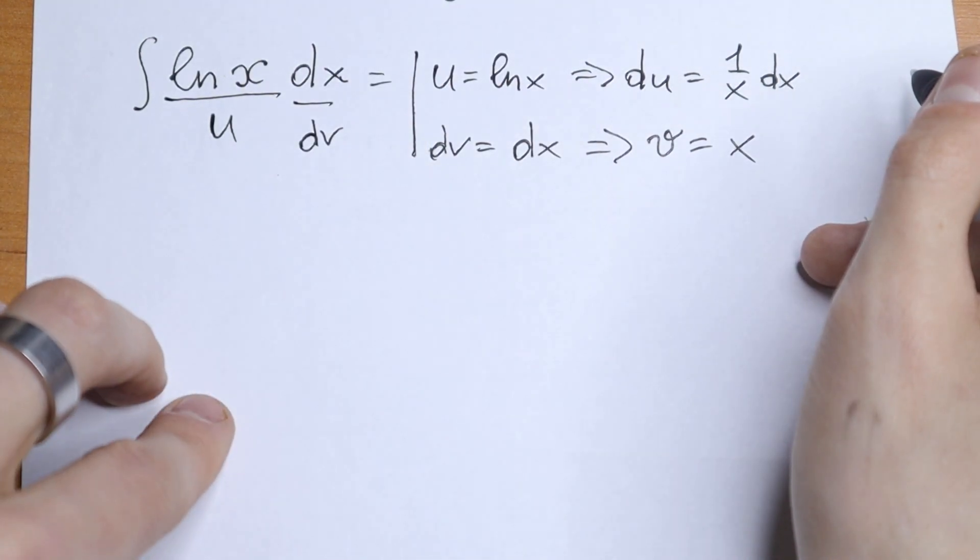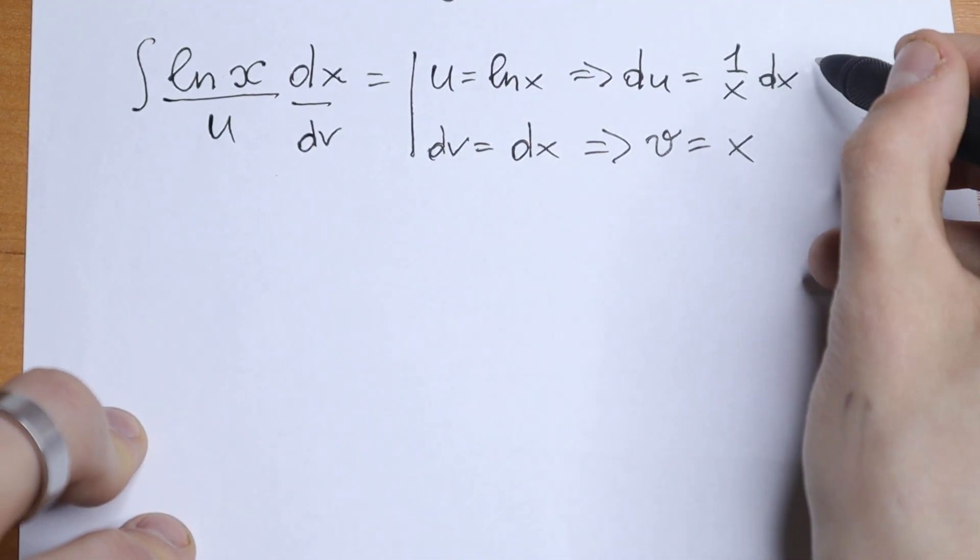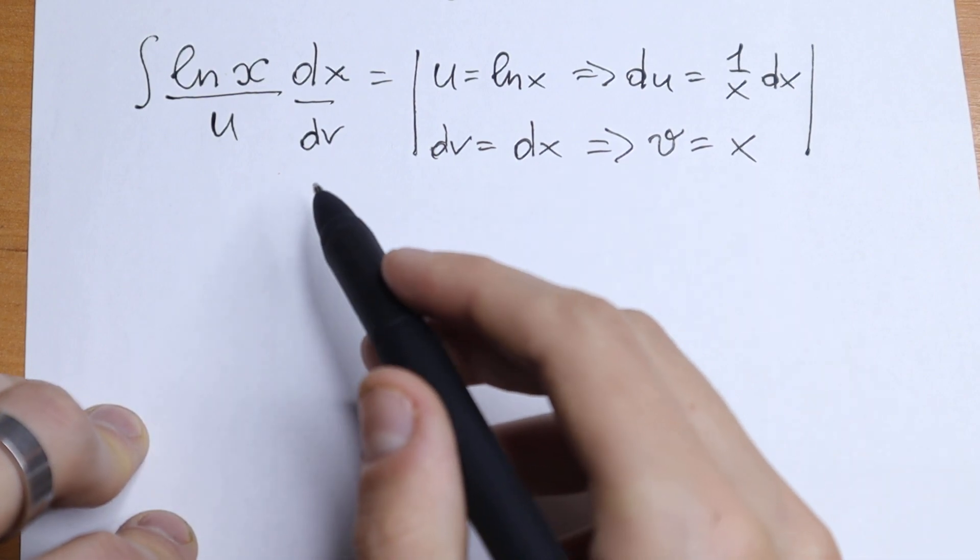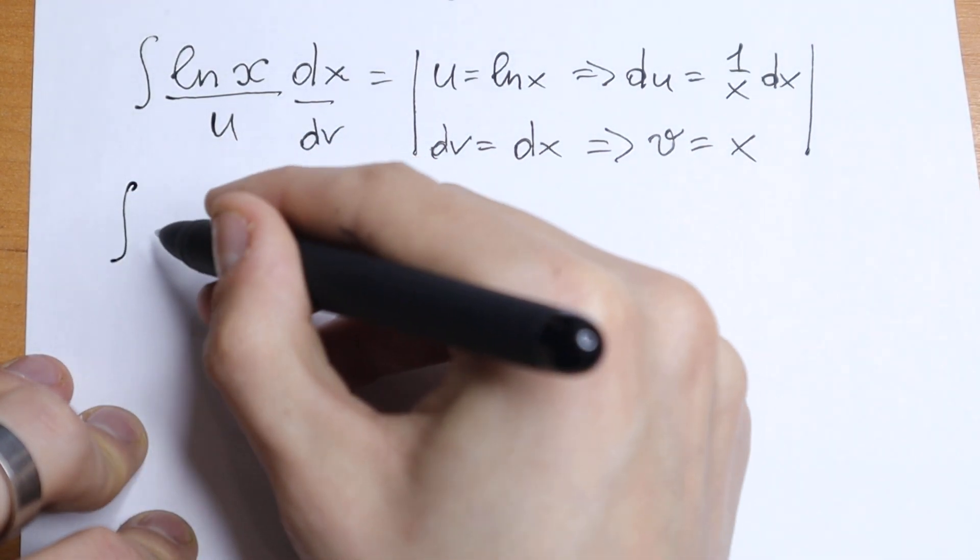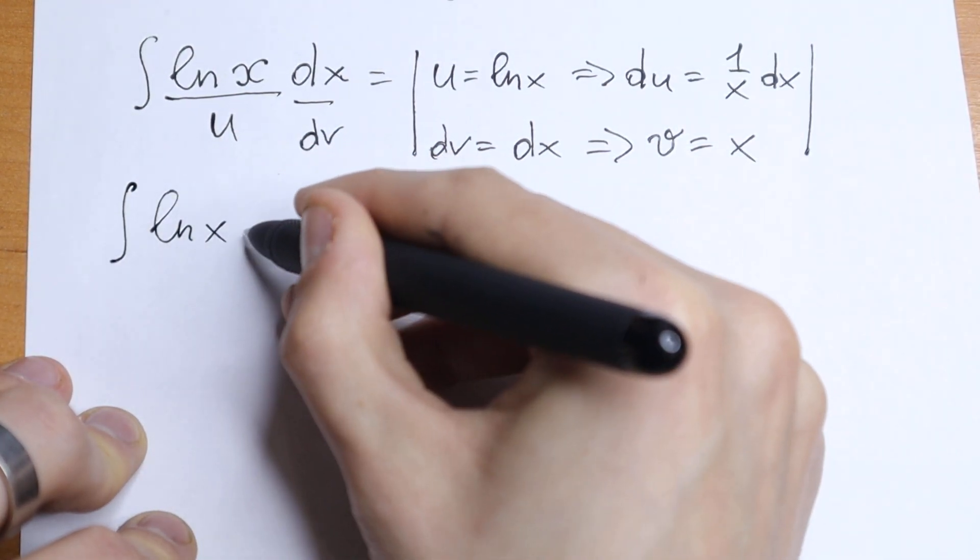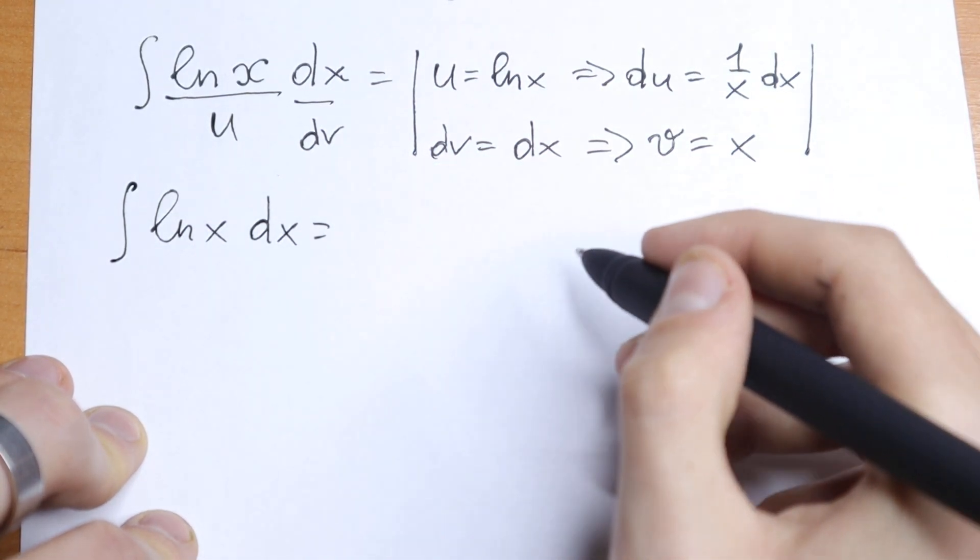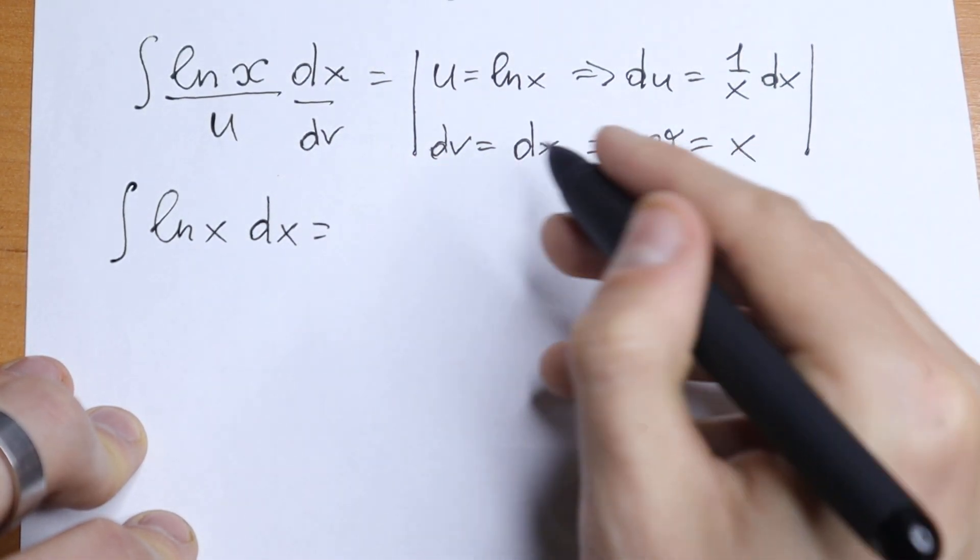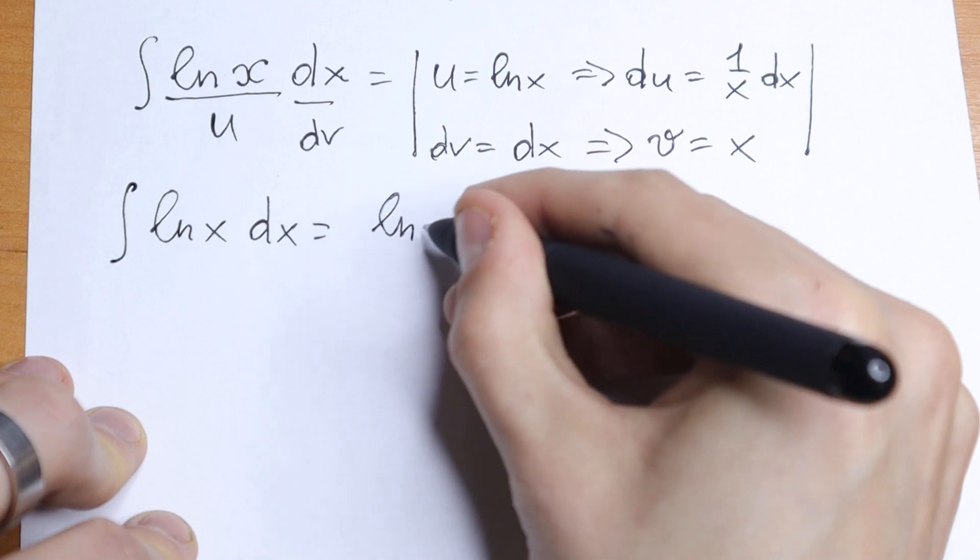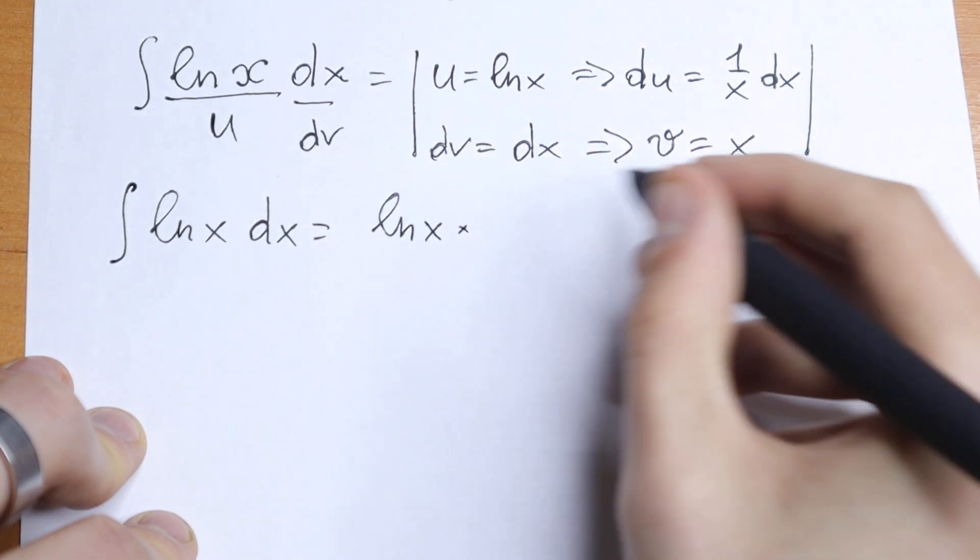Just find the integral from both of the parts. And let's put all of these elements in our formula. So we all know that the integral of ln(x) dx will be equal to u times v, so we will have natural log x times x,